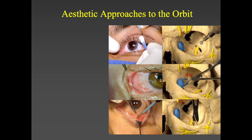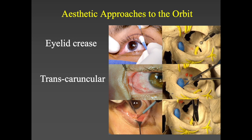Regarding aesthetic surgical approaches: for the lateral wall, the eyelid crease approach is most popular. For the medial wall, we have the transcaruncular approach, and for the floor and inferior orbit, we have the transconjunctival approach.